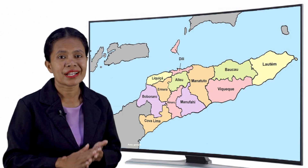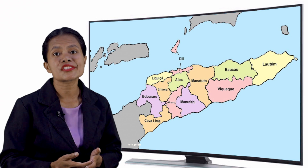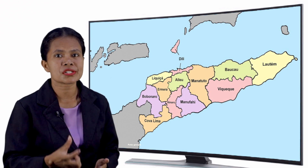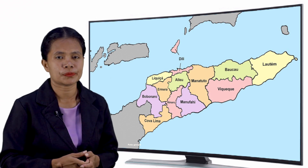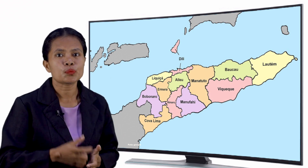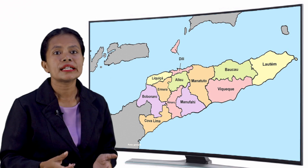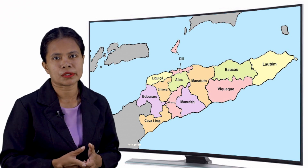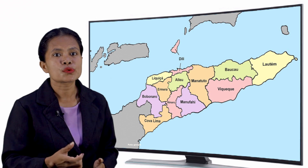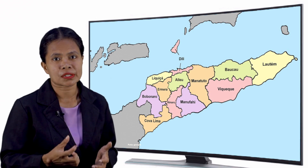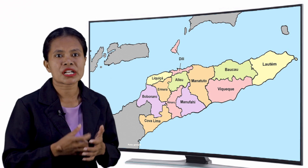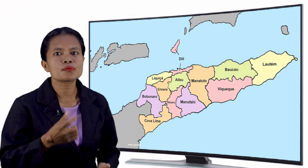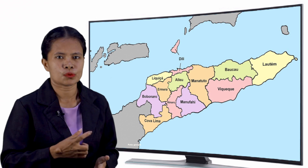Timor-Leste encontra-se dividido em 13 municípios, onde está incluída também uma região administrativa especial da Oekusi Ambeno. Cada município possui uma cidade capital e é formado por postos administrativos. Cada um dos 67 postos administrativos inscritos nos 13 municípios possui uma localidade capital e subdivisões administrativas ou sucos.